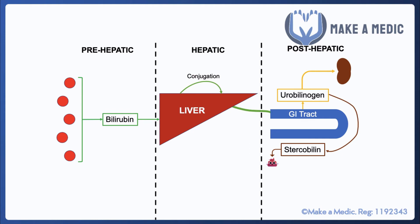An important point to remember is that the presence of urobilinogen in the urine is normal. It suggests you're able to produce conjugated bilirubin in the liver, which makes its way into the GI tract where bacteria convert it into urobilinogen, some of which gets reabsorbed and excreted by the kidneys. So that's a normal finding.